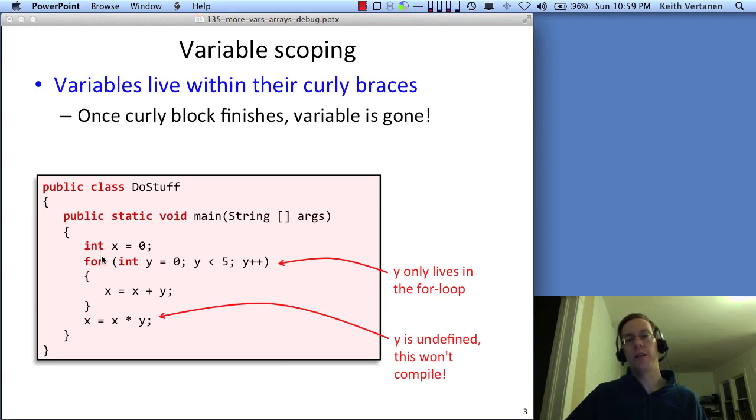Variables only live within the curly brace block in which they're declared. In this case, X was declared in the curly brace block that encompasses the entire main program. So in this program, you can use X anywhere in the program. You can use it once it's been declared. I can use it in the for loop and I can use it after the for loop.